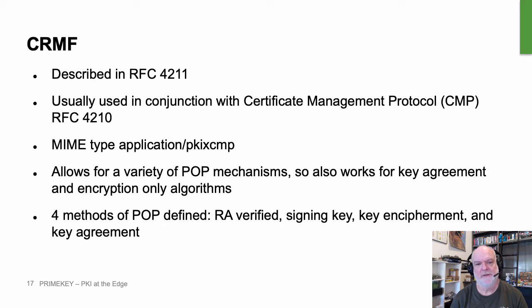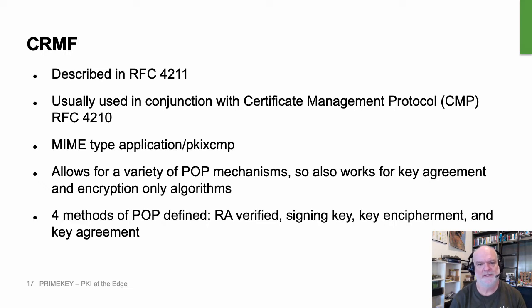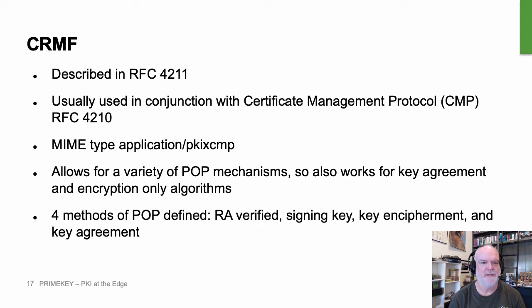For a signing key you can just verify a signature, so the CA can tell automatically that the certification request is acceptable. With key encipherment and key agreement, the CA will actually send the certificate back to you as an encrypted blob. You then have to work out how to decrypt it. The assumption is that once you've decrypted it and have possession of the certificate, you're clearly the person meant to have it, since otherwise you wouldn't have been able to decrypt it because you wouldn't have had the private key.